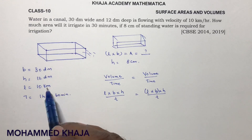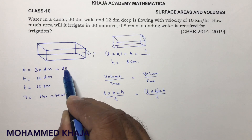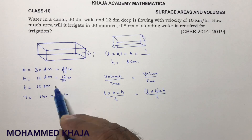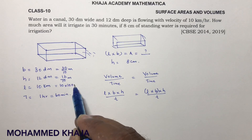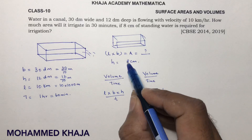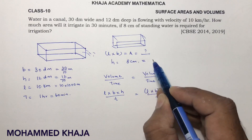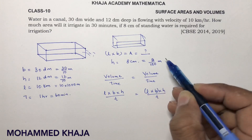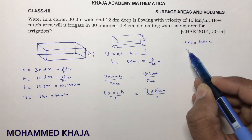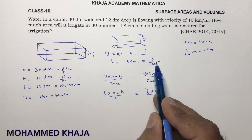Decimeter is one tenth of a meter, so 30 dm = 30/10 meters, 12 dm = 12/10 meters, and 10 km = 10 × 1000 meters. I change all three values into meters. Height is 8/100 meters because 1 meter = 100 centimeters, so 1 centimeter = 1/100 meter. So the height in centimeters is also written in terms of meters.